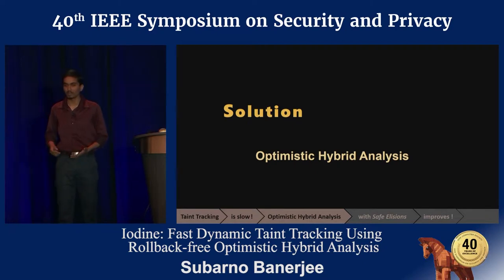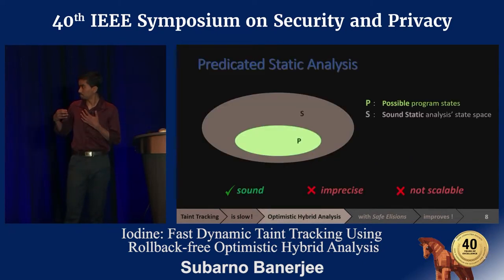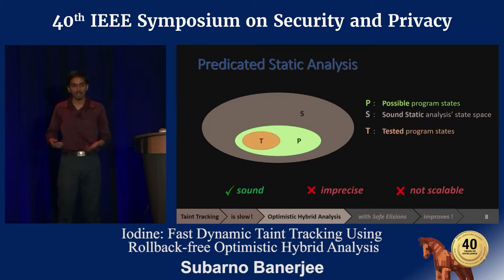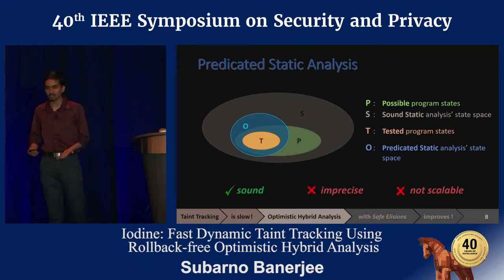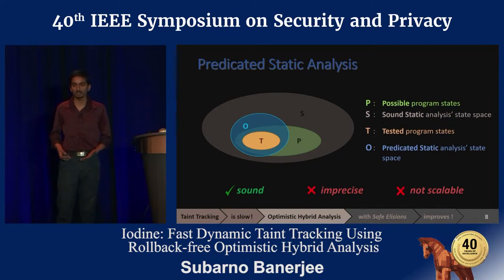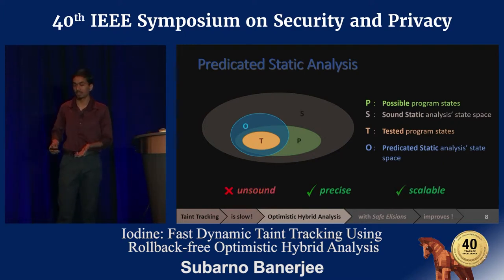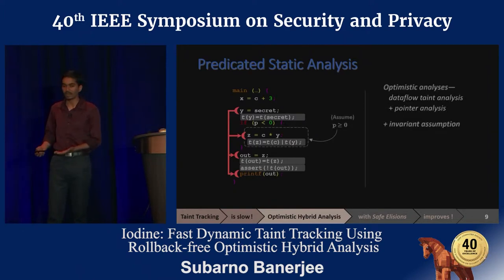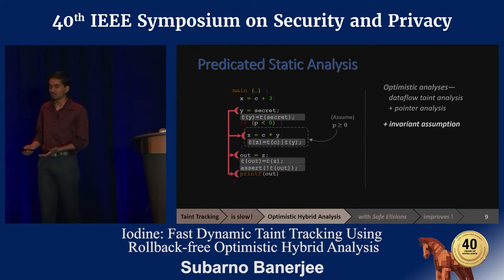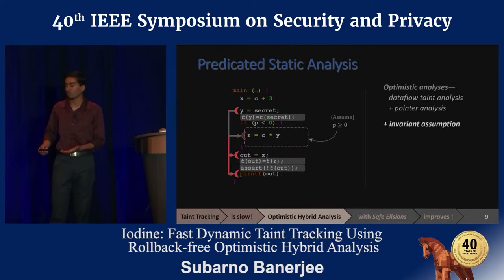Optimistic hybrid analysis is a new technique that attempts to mitigate this imprecision problem. It observes a few tested program states and then predicates the static analysis by using invariants learned on those states. These invariants are properties that are otherwise very hard to prove statically but almost always hold dynamically. By assuming them, the static analysis significantly reduces its state space, thereby making it precise and scalable. But careful design is still needed for soundness when a state outside the predicated analysis is encountered. So looking back at our example, if the variable p always takes non-negative values in all useful executions, the static analysis can assume this invariant to induce more aggressive optimizations — reasoning that Y's taint would never flow forward to Z and then out — and so elide those taint monitors.